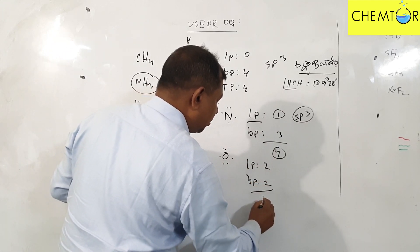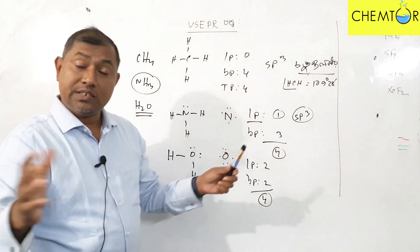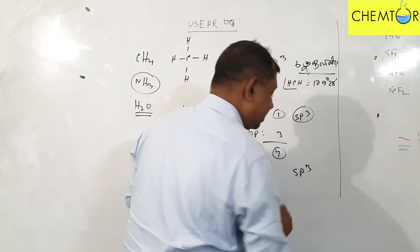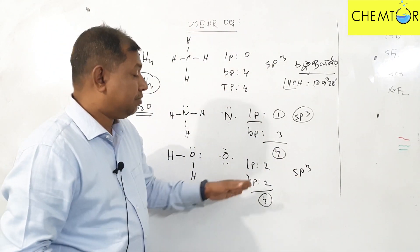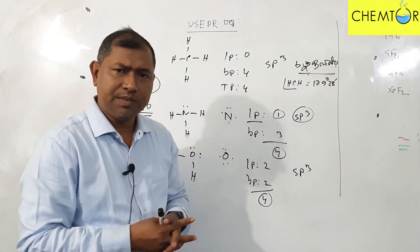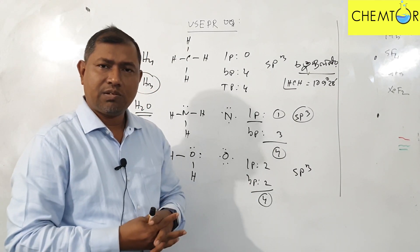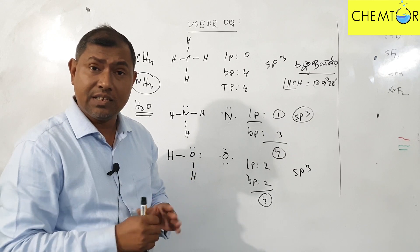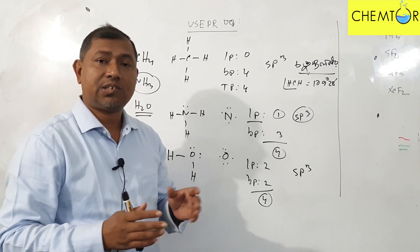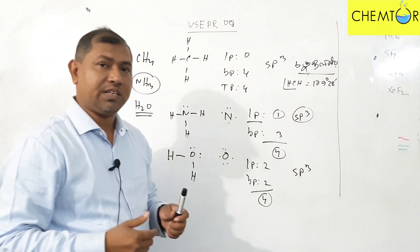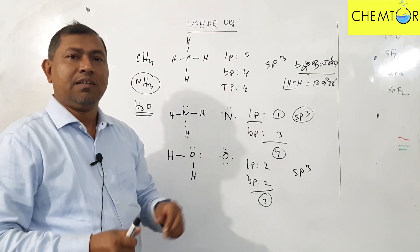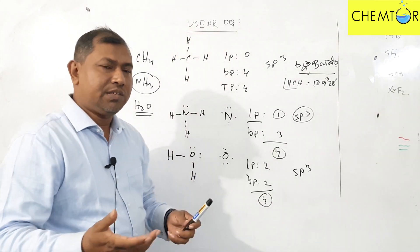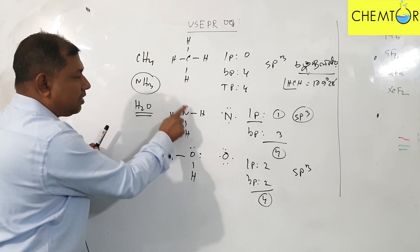And 2 lone pairs. So we need to know that this is sp3. Then we need sp3. The VSEPR theory: VSEPR is called Valence Shell Electron Pair Repulsion theory. This theory is about the electron lone pair and bond pair.